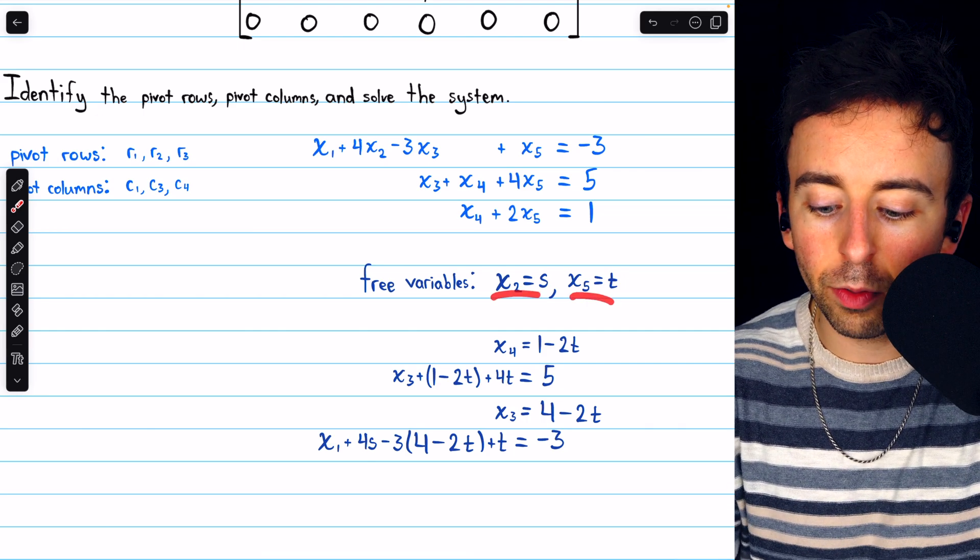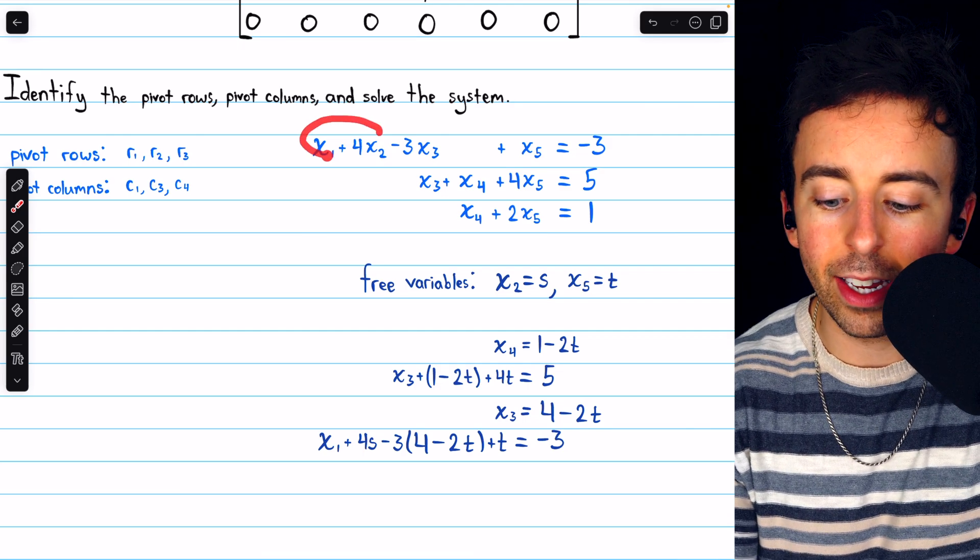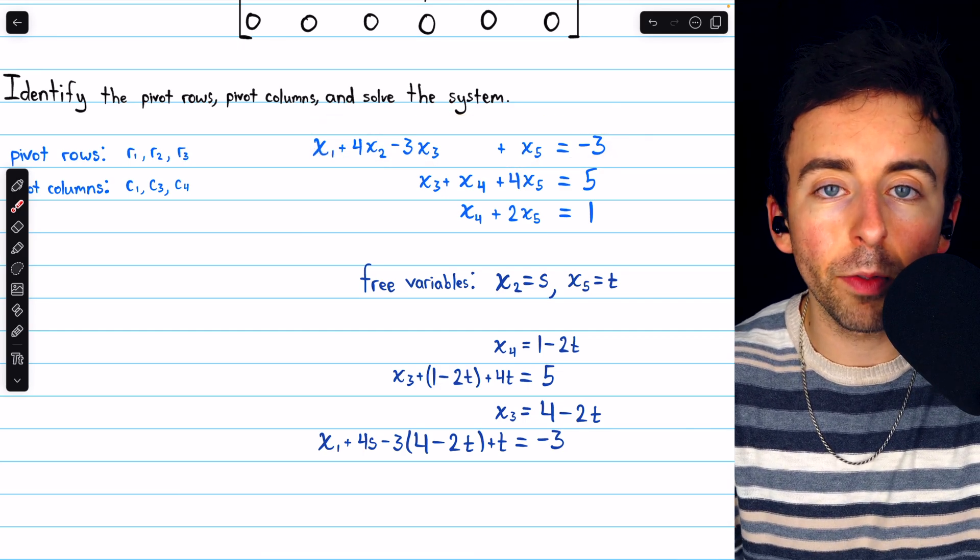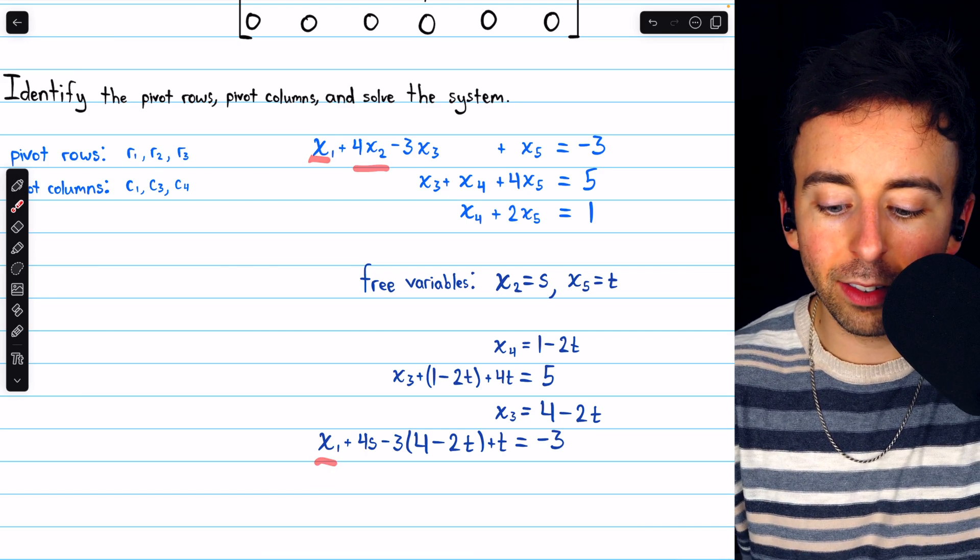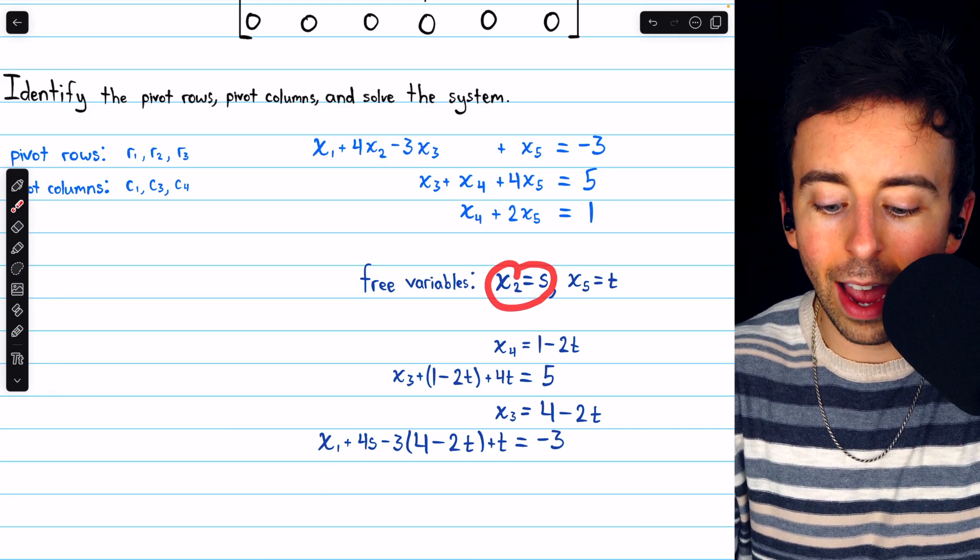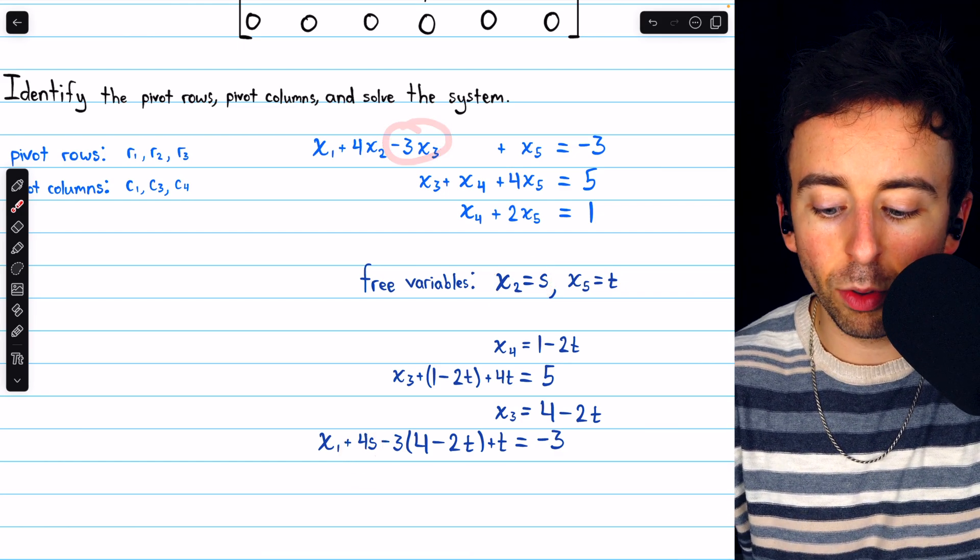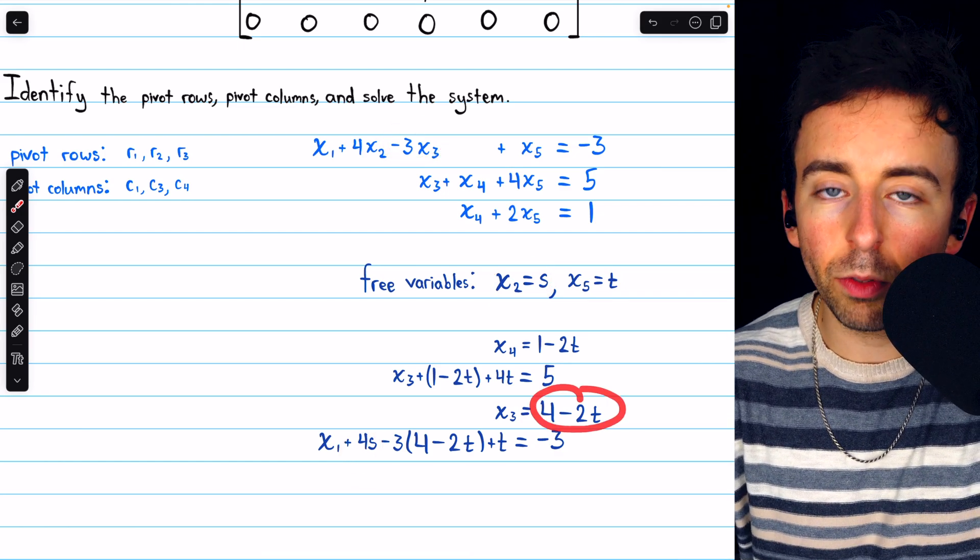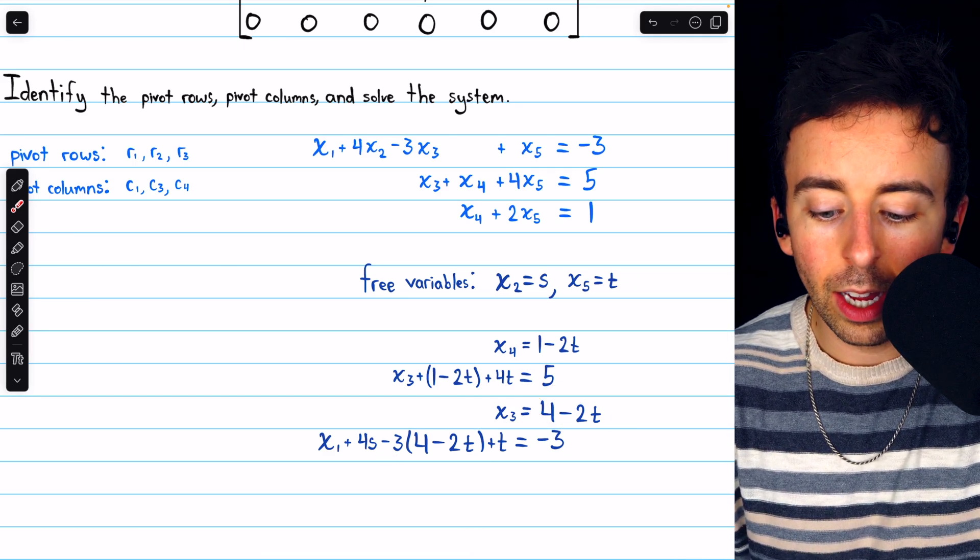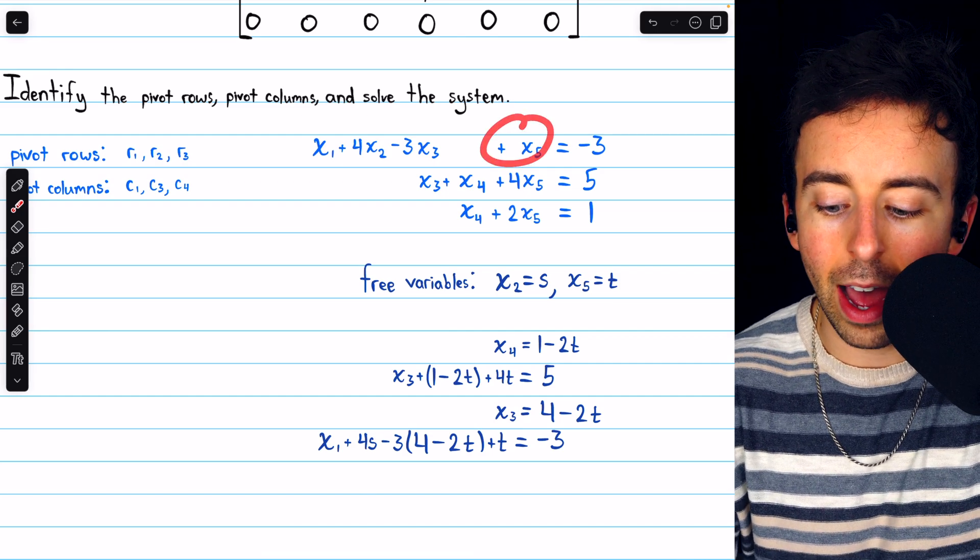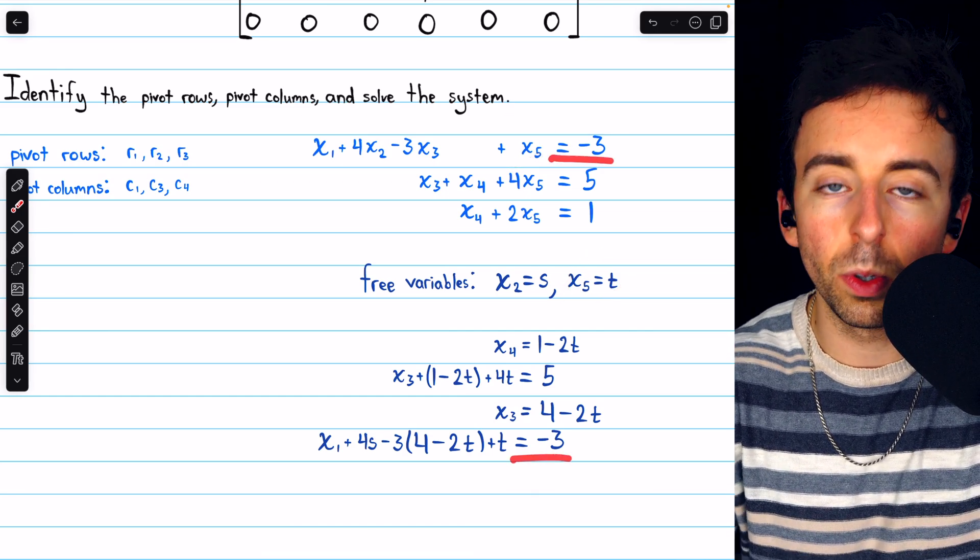Now that we know what x2, x5, x4, and x3 are, we can plug all of that into equation 1 and solve for x1. Equation 1 has x1, and then plus 4x2, but we know that x2 is s, so that's plus 4s. And then minus 3x3, but we know x3 is 4 minus 2t, so minus 3 times 4 minus 2t. And then it has plus x5, and x5 is t, so that's plus t, and this whole thing is equal to negative 3.